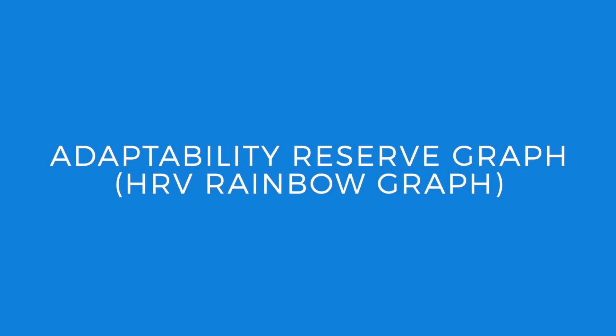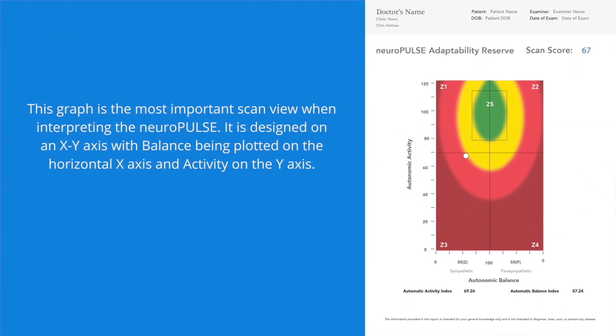The Adaptability Reserve Graph, better known as the HRV rainbow graph, is the most important scan view when interpreting the neuropulse. It is designed on an x-y axis with balance plotted on the horizontal x-axis and activity on the y-axis. The vertical centerline represents the ideal operational balance between the activity in the sympathetic and parasympathetic nervous systems.